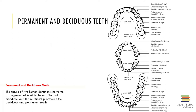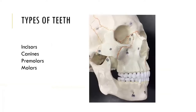Here is some information on the teeth, which we will go over more as part of a lesson in class. The types of teeth are the incisors, the canines, the molars, and the premolars.